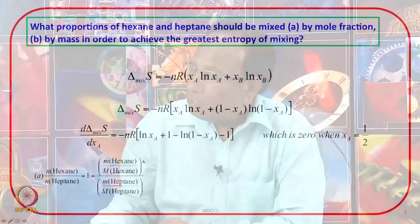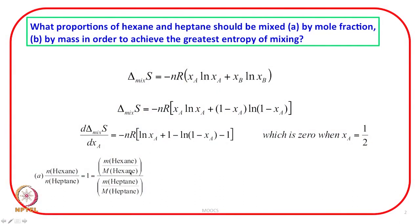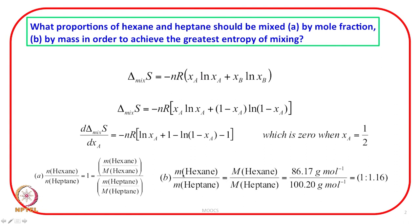Now we want to find the proportion in terms of mass. The number of moles equals mass divided by molecular weight. So moles of hexane equals mass of hexane divided by molecular weight of hexane, and similarly for heptane. Since the mole ratio must equal 1, the ratio of mass of hexane to heptane can be calculated from the ratio of their molecular weights. After substituting the values, we find that by mass the proportion should be 1:1.16.